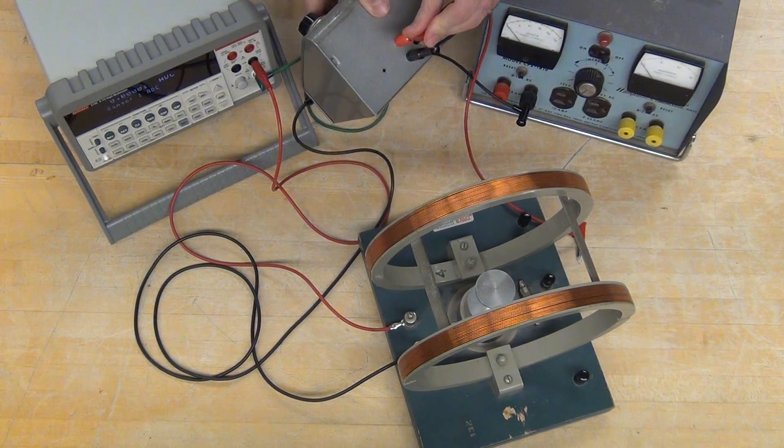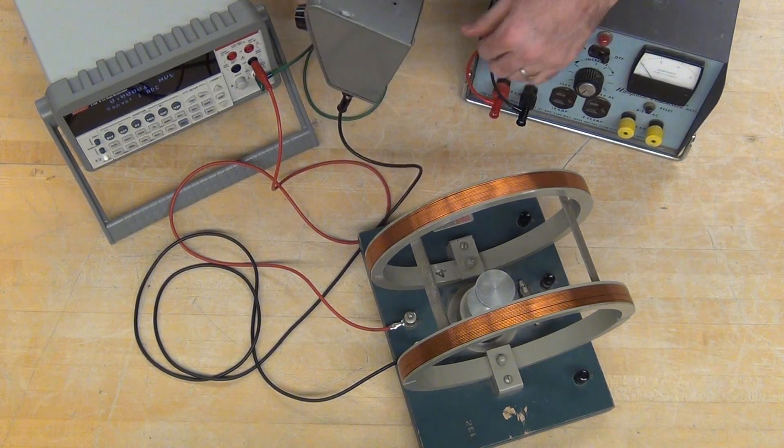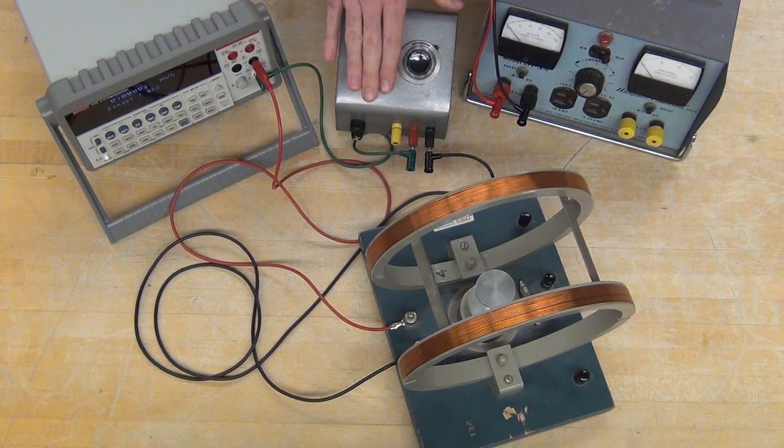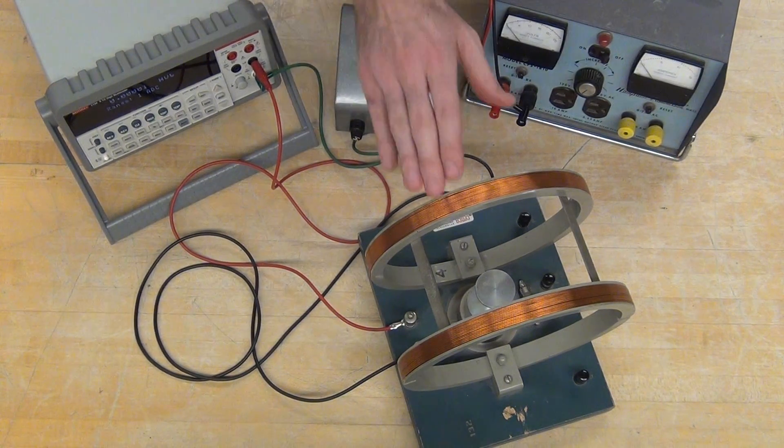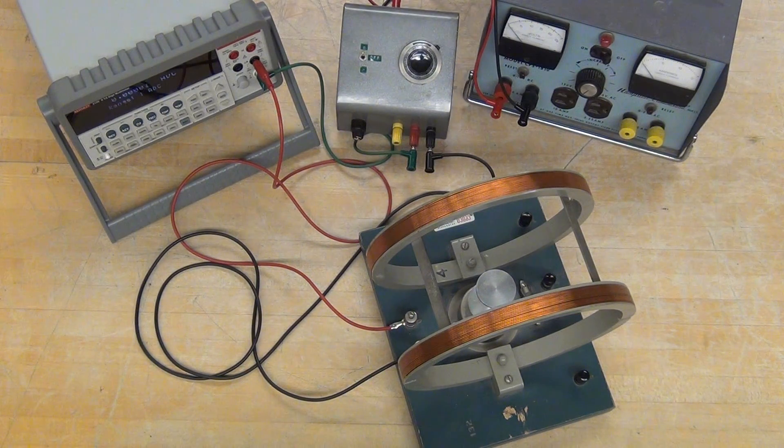So from black to black, red to red. And so now this voltage dividing box is in between the Hamden and the coil.